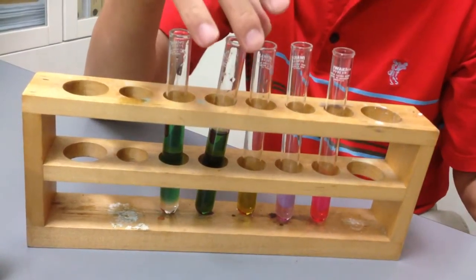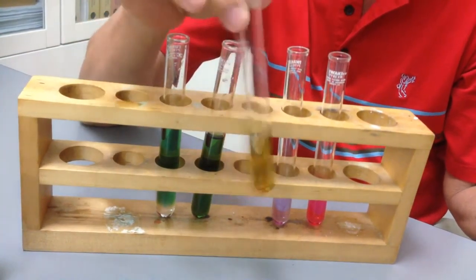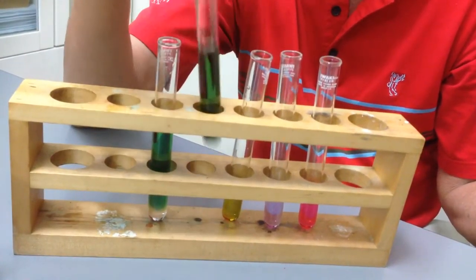So you notice that now, the sodium hydroxide has turned yellow. So it was green at first and then it turned yellow.